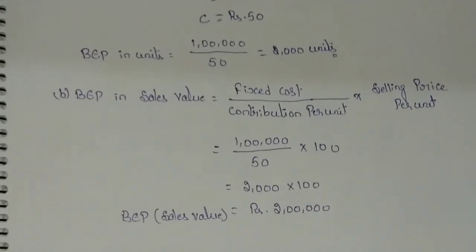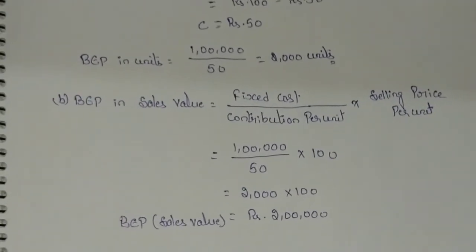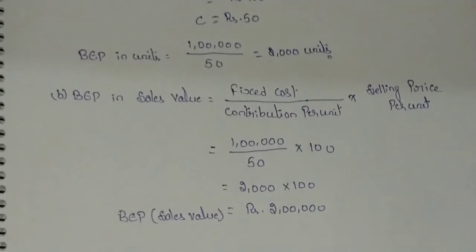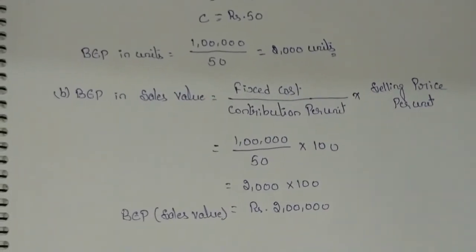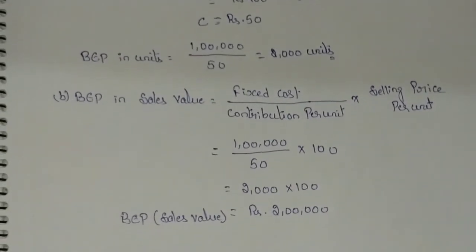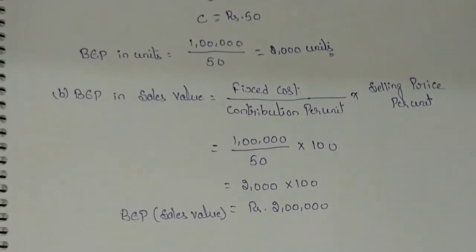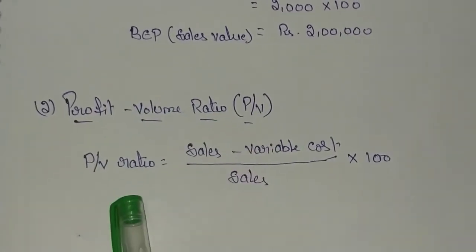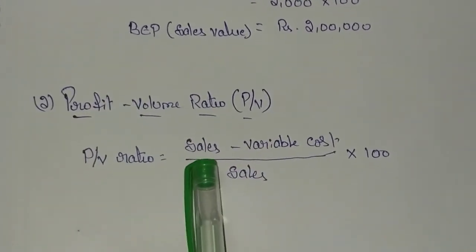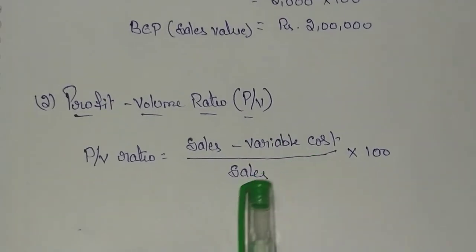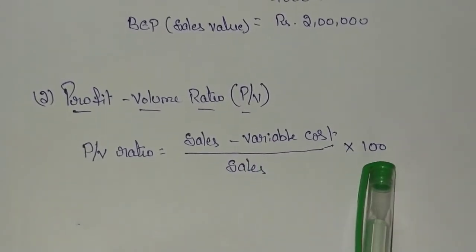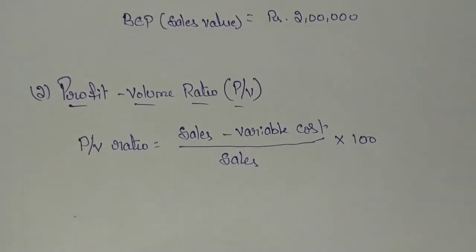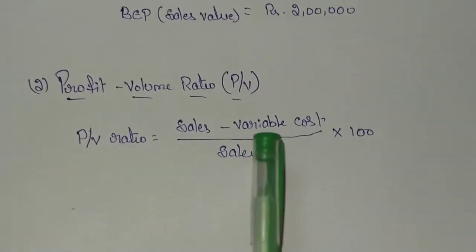Next, they are asking to calculate the profit volume ratio, that is PV ratio. The formula for calculating profit volume ratio is: sales minus variable cost, divided by sales, into 100.